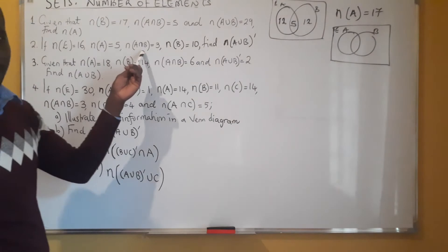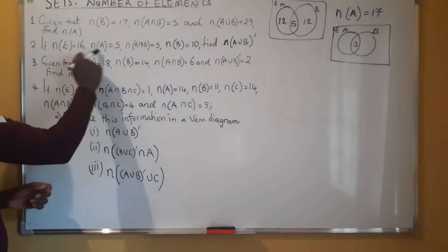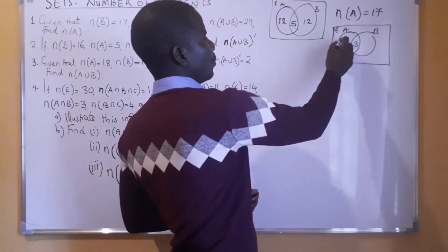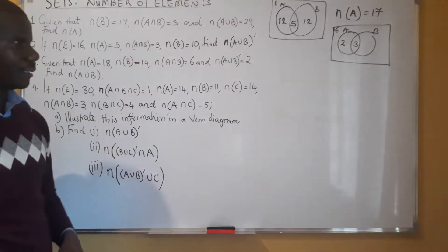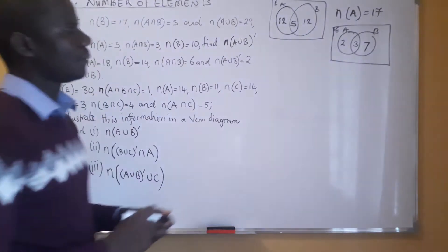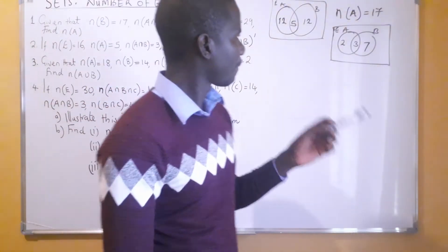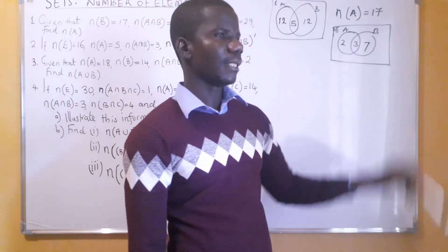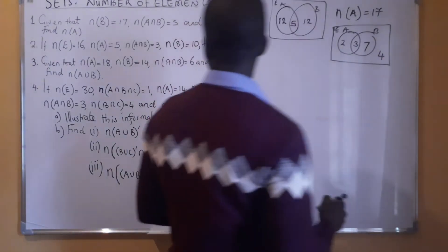We start with the intersection — our intersection is 3, which is common in both sets. A should have 5 elements; we already have 3 in A, so 2 is what we write there. B should have 10 elements; we already have 3, so 7 must be here. The universal set has 16 elements, so you add all these — that gives us 12 — then subtract from 16. What remains you put outside, so we have 4.